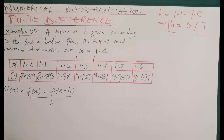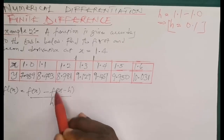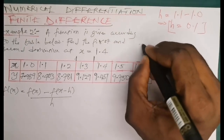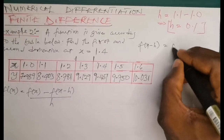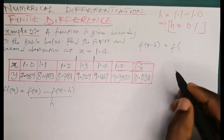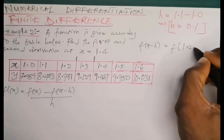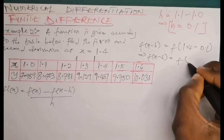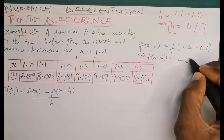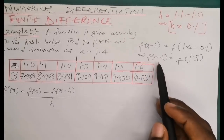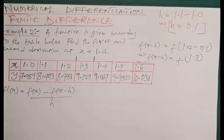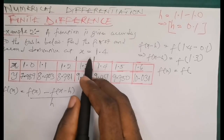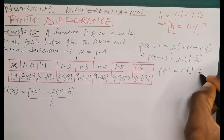From the formula, we need to find f(x minus h). Since x is the point of interest, x equals 1.4, we have f(x minus h) equals f(1.4 minus 0.1) equals f(1.3). And f(x) itself, since x is 1.4, simply means f(1.4).